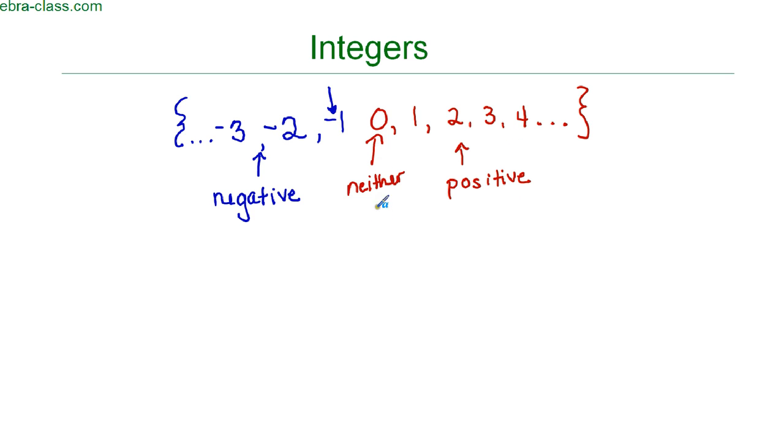And again, 0 is not considered negative or positive, but it is considered an integer. So, the most important thing that you need to remember about integers is that the set of integers does not contain any fractions or any decimals. They must be whole numbers, but they can be positive or negative.